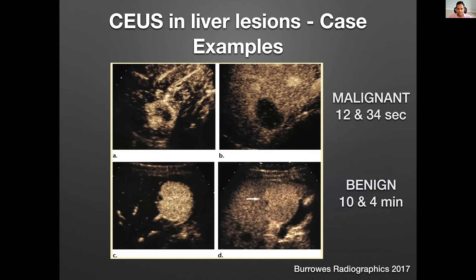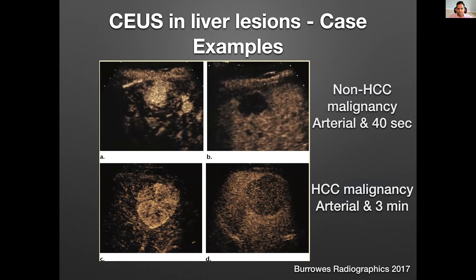From the paper: a malignant lesion showing enhancement at 12 seconds and then washout quickly at 34 seconds. This early punched-out washout indicates a non-hepatocellular malignancy pattern. A benign lesion at 10 seconds shows really avid, homogenous enhancement, and at four minutes it's still enhancing — sustained enhancement — so that's benign. Then differentiating: arterial enhancement with washout at 30-40 seconds punched out is non-HCC malignancy.